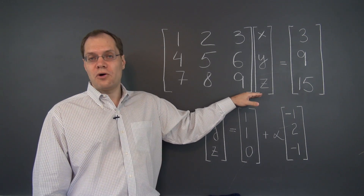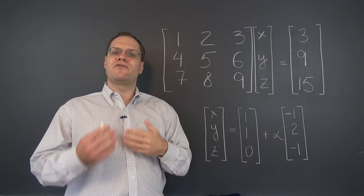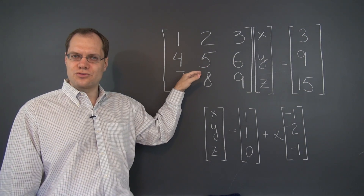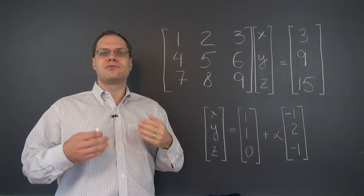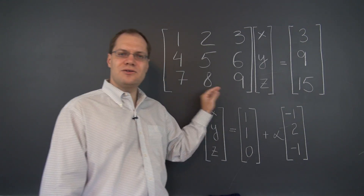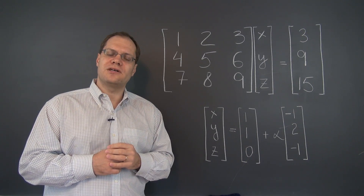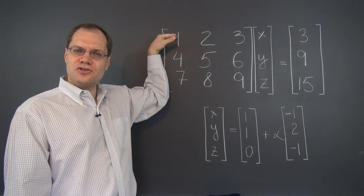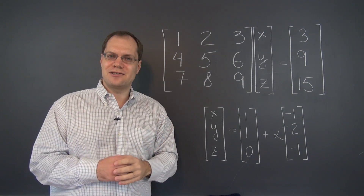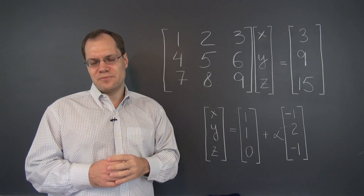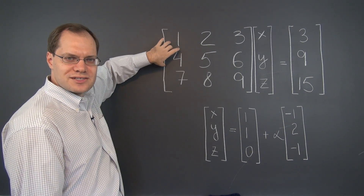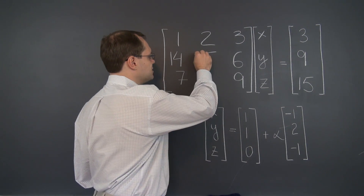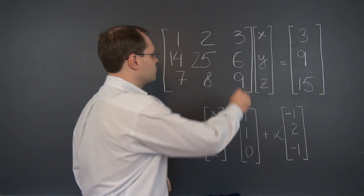We'll go forward with Gaussian elimination in just a little bit. But first, let's perform a few random row operations on this system, remembering to do the same thing to the right-hand side as we do to the rows, and see what happens to the relationships among the columns and the relationship of the right-hand side to the columns of the matrix. The first row operation we'll consider is adding a multiple of one row to another — let's add 10 of the first row to the second row. This won't help us with Gaussian elimination; I'm picking a multiple of 10 just so I don't have to do much erasing. So adding 10 of the first row to the second leaves the first row unchanged, but the second row becomes 14, 25, and 36.